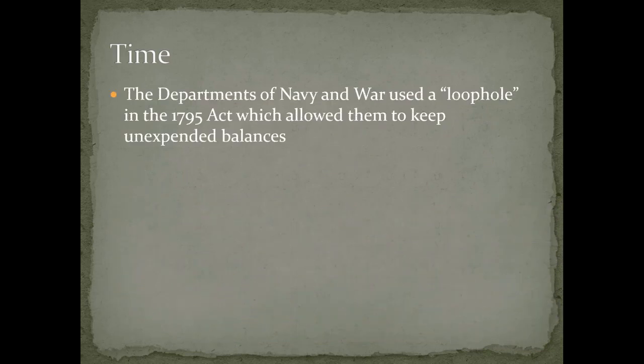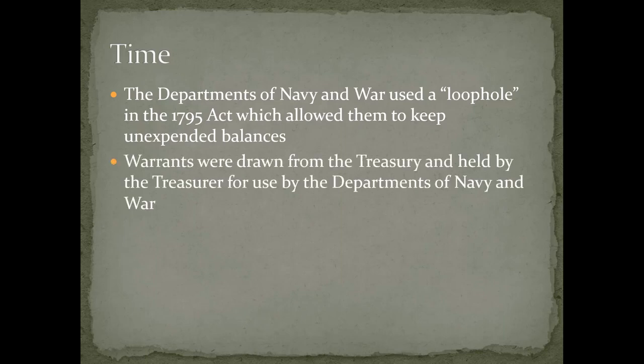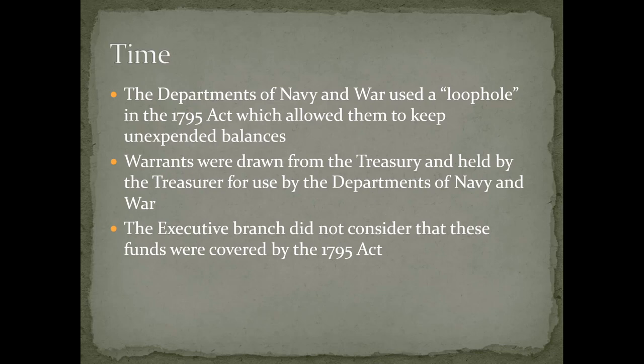There was a loophole found by the Departments of Navy and War in the 1795 act, which they thought allowed them to keep their unexpended balances. The treasury warrants were taken from the Treasury and held by the treasurer for the use of the Departments of Navy and War, so they thought these funds weren't really covered by the 1795 act.